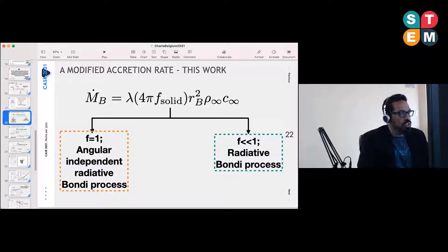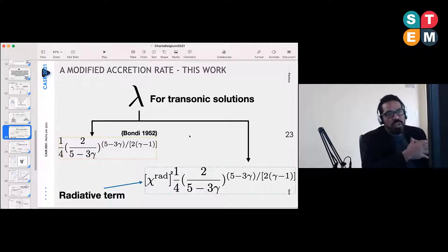In order to have transonic solutions, you need to put the accretion rate exactly at the critical value in the case of Bondi or pure gravity in 1952.